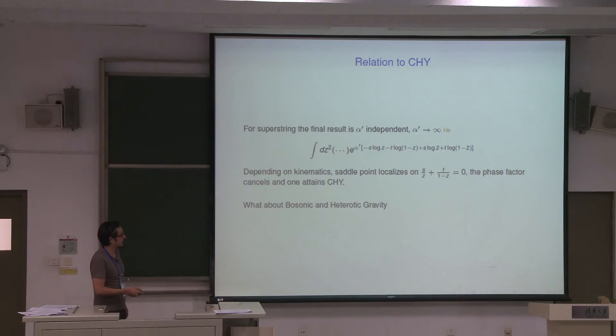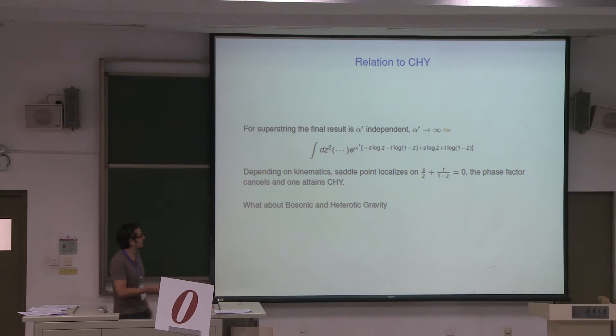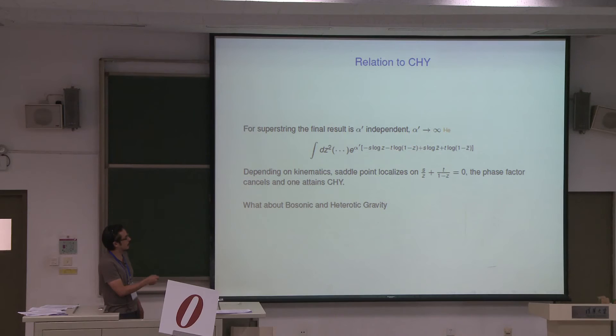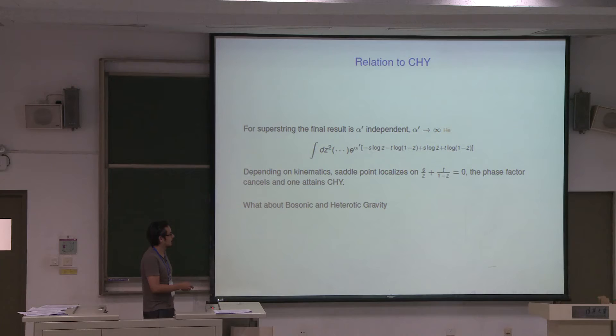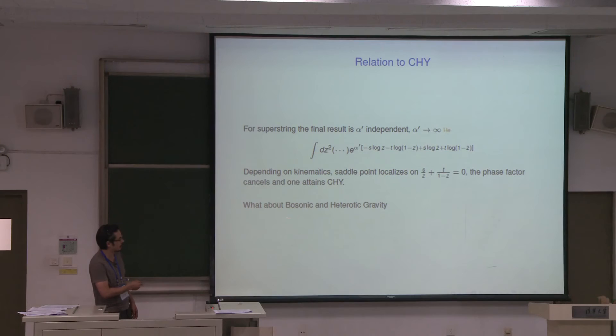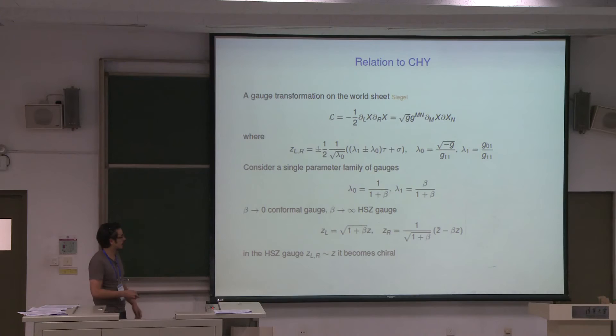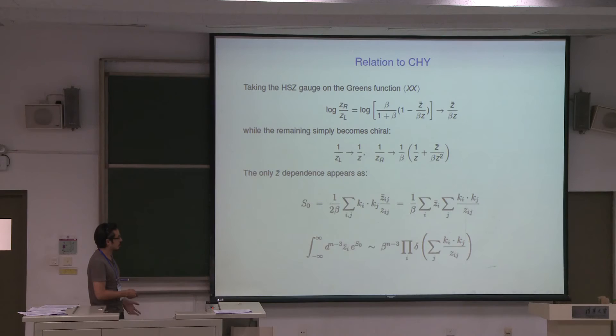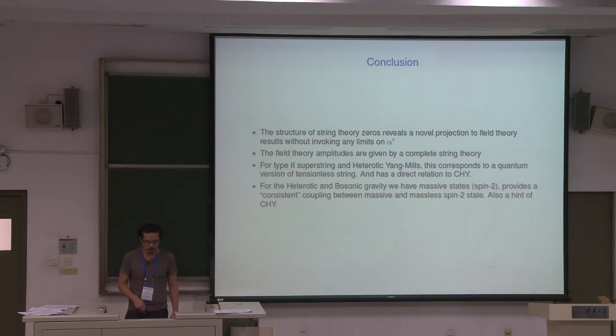As I mentioned, we want to relate this to the CHY formulation. You can do this because you can take alpha prime to infinity without changing your theory and just do the saddle point. Precisely because of the opposite sign between left and right, when plugging in the saddle point solution, the phase factors cancel each other. So the logarithmic suppression that occurs in usual string theory no longer happens here. There's still an issue about bosonic gravity and heterotic gravity, which have these massive spin-2 states, and there's a hint they're also related to some kind of scattering equation formulation.